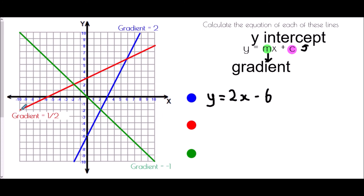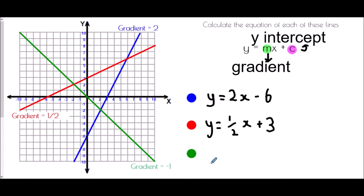For the red line, the gradient was one half, so we have y equals one half x. The line crosses the y-axis at positive three, giving a y-intercept of plus three. The equation of the red line is y equals one half x plus three.